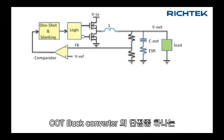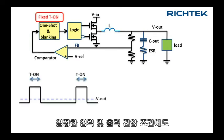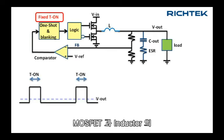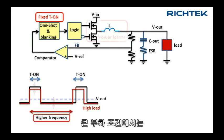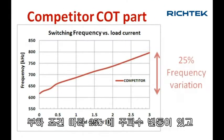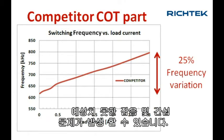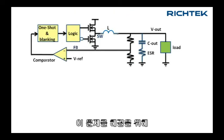One of the drawbacks of COT buck converters is their large frequency variation over operating conditions. Even with defined input and output voltages, a fixed t-on will mean that frequency will have to increase at higher load levels to compensate for the power losses in the MOSFETs and inductor. Competitor COT parts can easily show 25% frequency variation at different load conditions, which can lead to unexpected noise and interference problems.